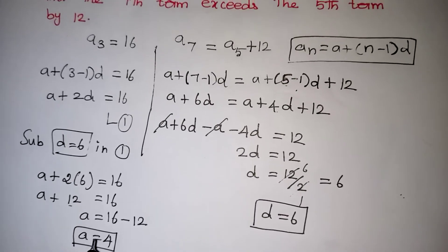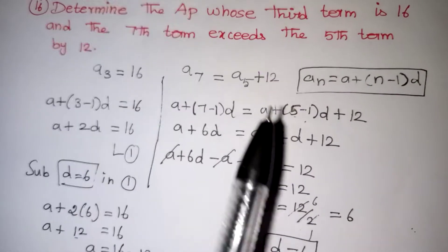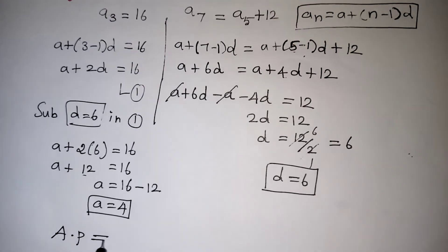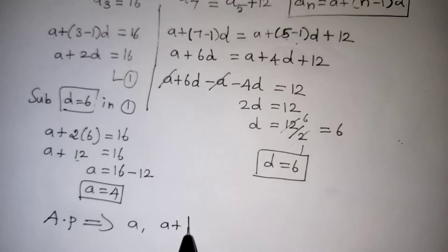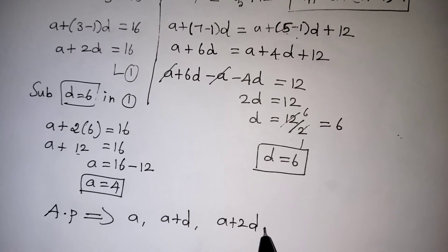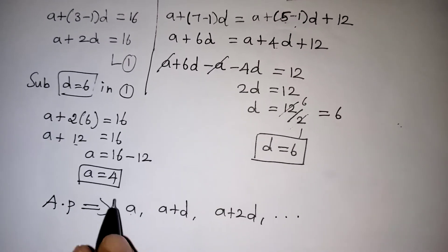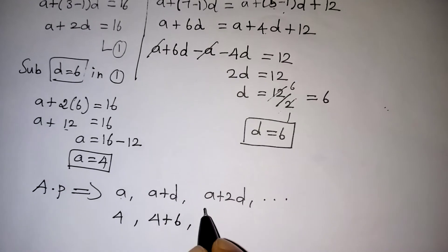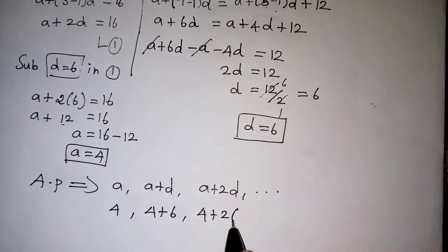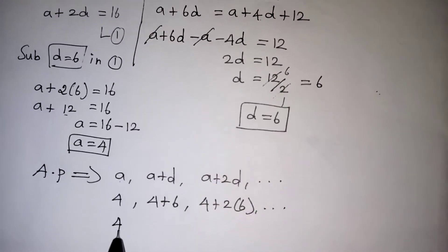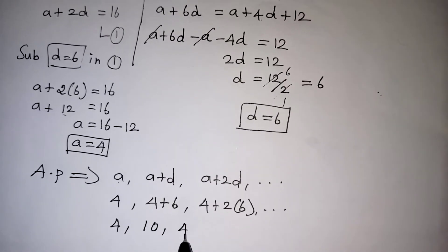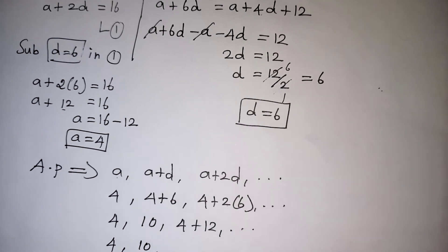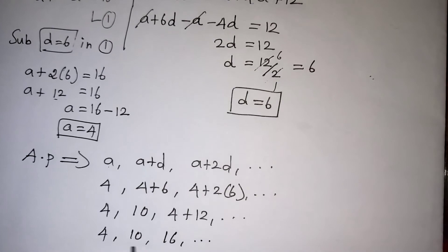Actually, what is our question? We need to determine the AP. So AP, the general form is A comma A plus D, A plus 2D and it will be going on. A value is 4, A plus D is 4 plus 6, again 4 plus 2 into 6 and it will be going on. So 4, 4 plus 6 is 10, 4 plus 12 is 16 and it will be going on.